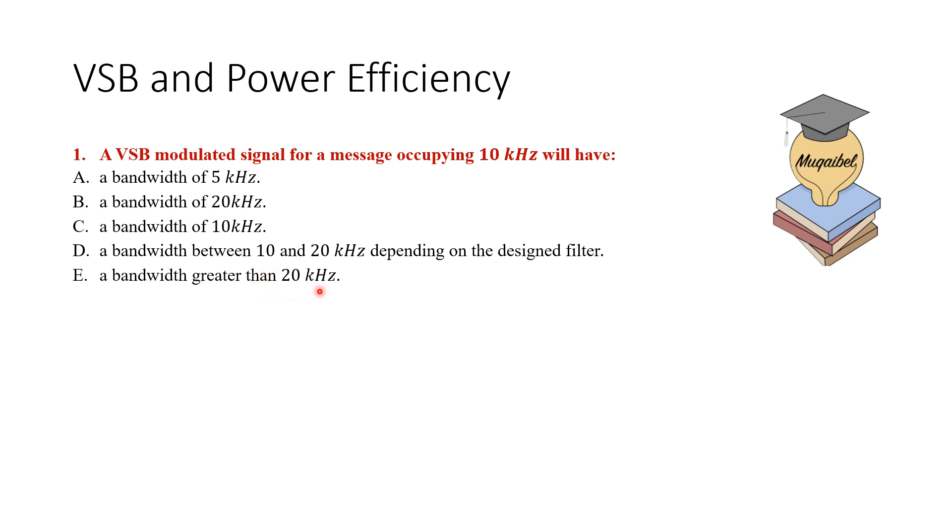Please mark your answer. This is a relatively quick and easy warm-up question. Now the next question: a single tone signal m(t) with amplitude 4 volts is transmitted using AM. Then the maximum power efficiency will be: select your answer.